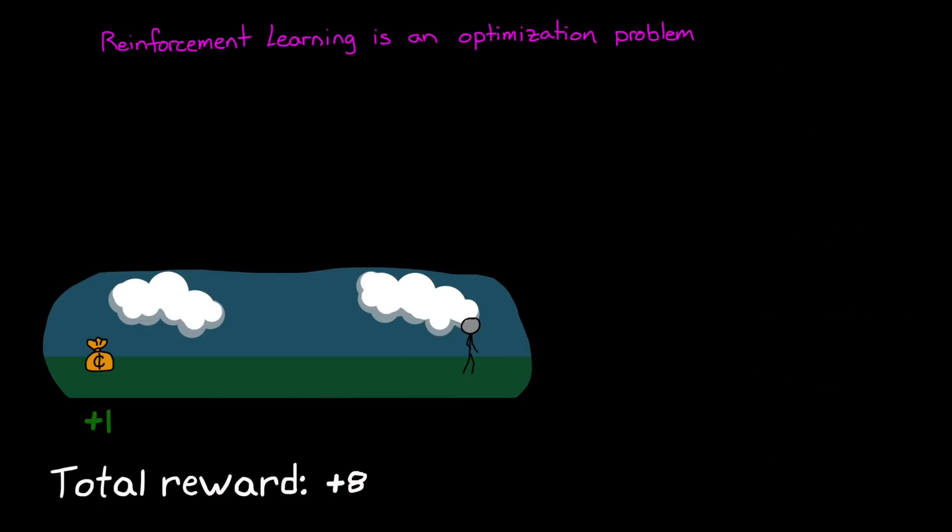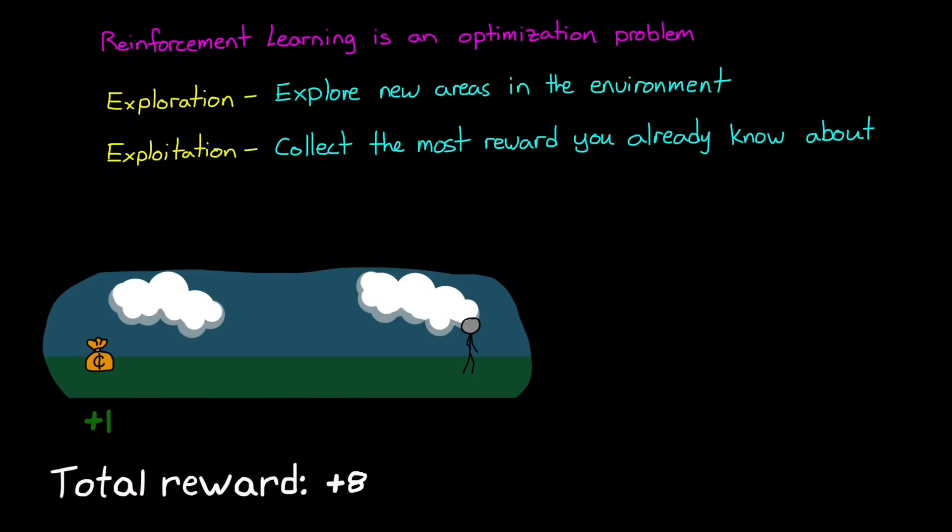Another critical aspect of reinforcement learning is the trade-off between exploration and exploitation when interacting with the environment. This is the trade-off between collecting the most rewards that you already know about versus exploring areas of the environment that you haven't visited yet.